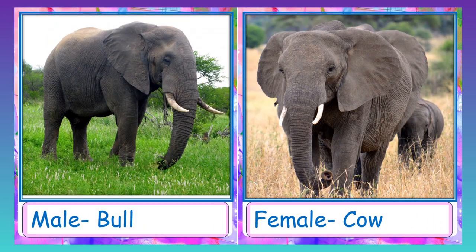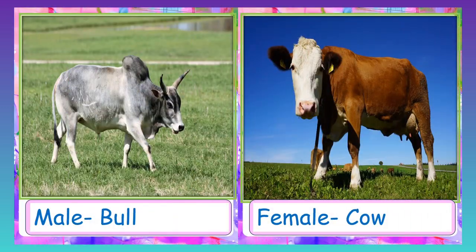Elephant: male elephant is called bull and female elephant is called cow. Cow: male cow is called bull and female is called cow.